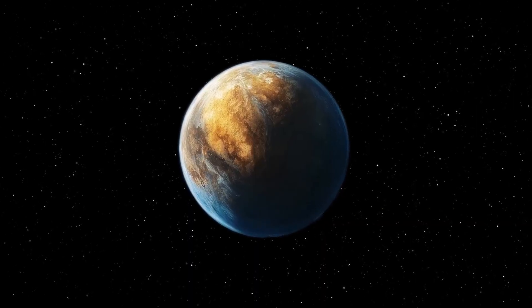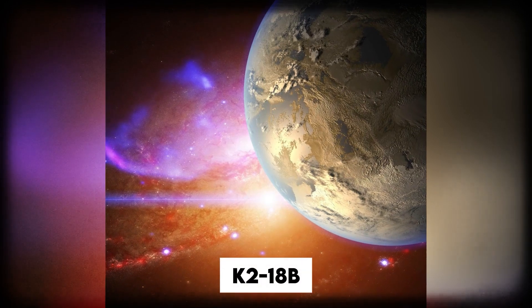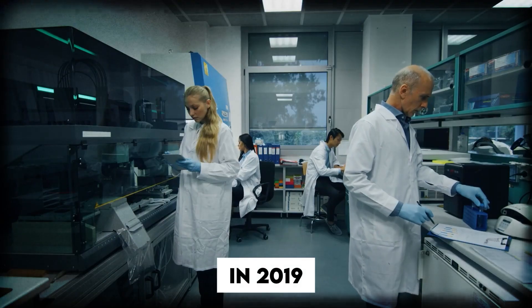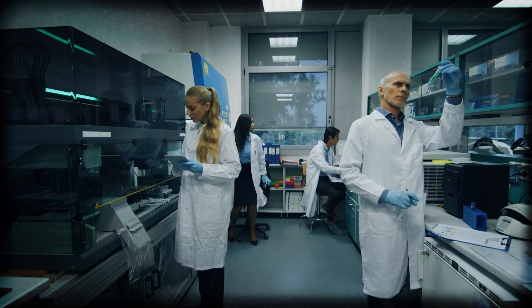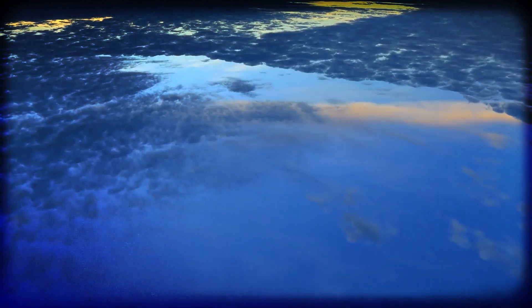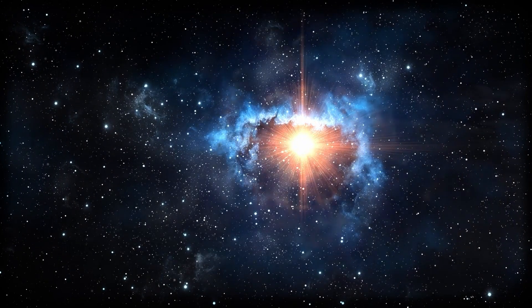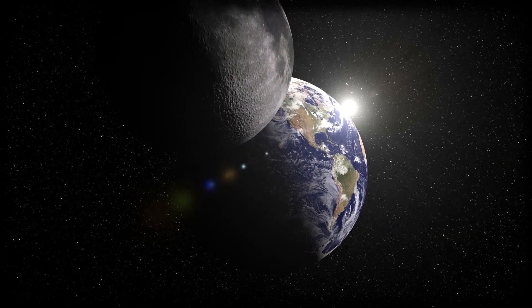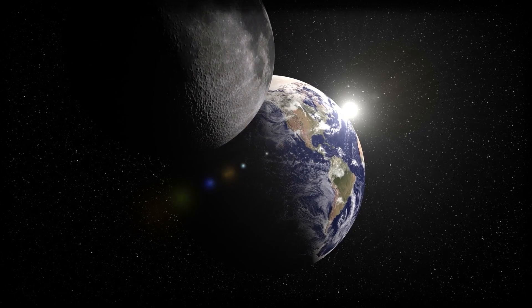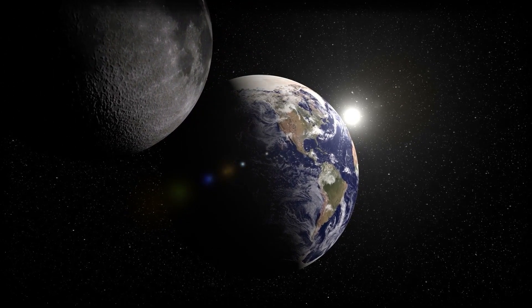One especially exciting discovery from Kepler is a planet called K2-18b. In 2019, two separate research teams found something incredible: evidence of water vapor in its atmosphere. That's a big deal. K2-18b is located about 124 light-years from Earth, and while it's about eight times Earth's mass and three times the size, it sits comfortably in its star's habitable zone.